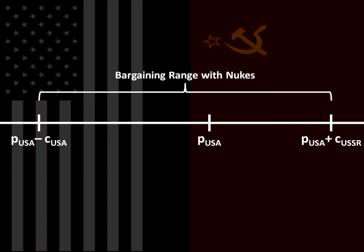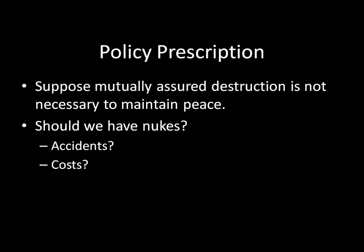So what does this mean? What's the policy prescription? Suppose that mutually assured destruction is not really necessary to maintain peace — suppose we take Mueller's premise and conclusion for granted, that we don't need nuclear weapons to have peace, and that war is just so costly between major powers that they would be bargaining out anyway. Then the big question becomes: should we have nukes? There are some risks and consequences to having nuclear weapons — accidents are possible, and nuclear weapons are extremely costly. So if the obsolescence of war is true, then perhaps these accidents and costs might give us reason to be pessimistic about nuclear weapons.